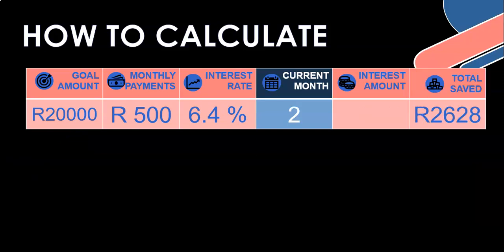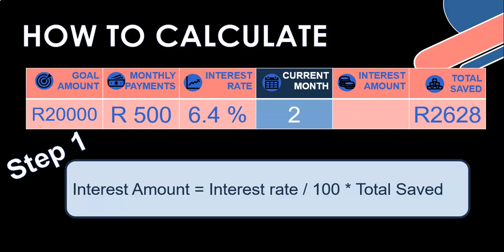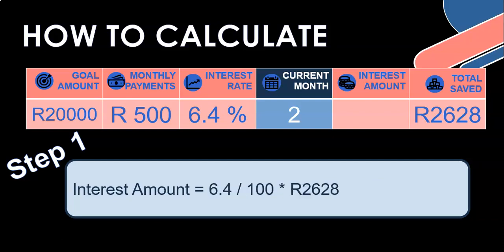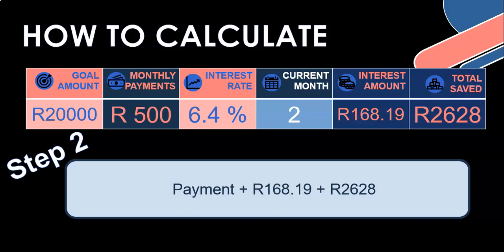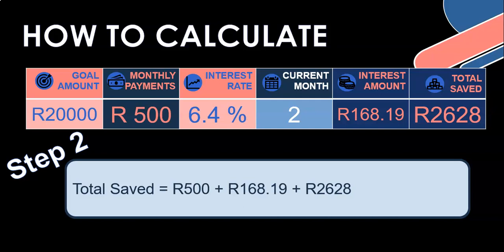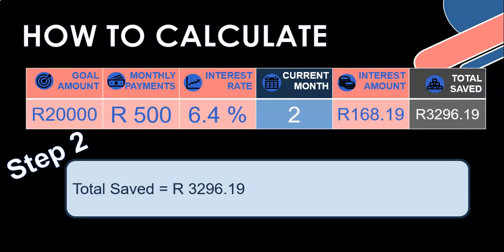For the second month, we need to work out the interest again - but now it's on whatever's currently in total saved, because we added monthly payments and got some interest. That's compound interest - interest on interest. So we take that 2,628 and calculate 6.4% of that, which gives us some decimal numbers. Then step two: take what's currently in the bank account, plus the new interest amount, plus that 500, and that becomes the new total saved. Our money is accumulating faster than just saving under the mattress.